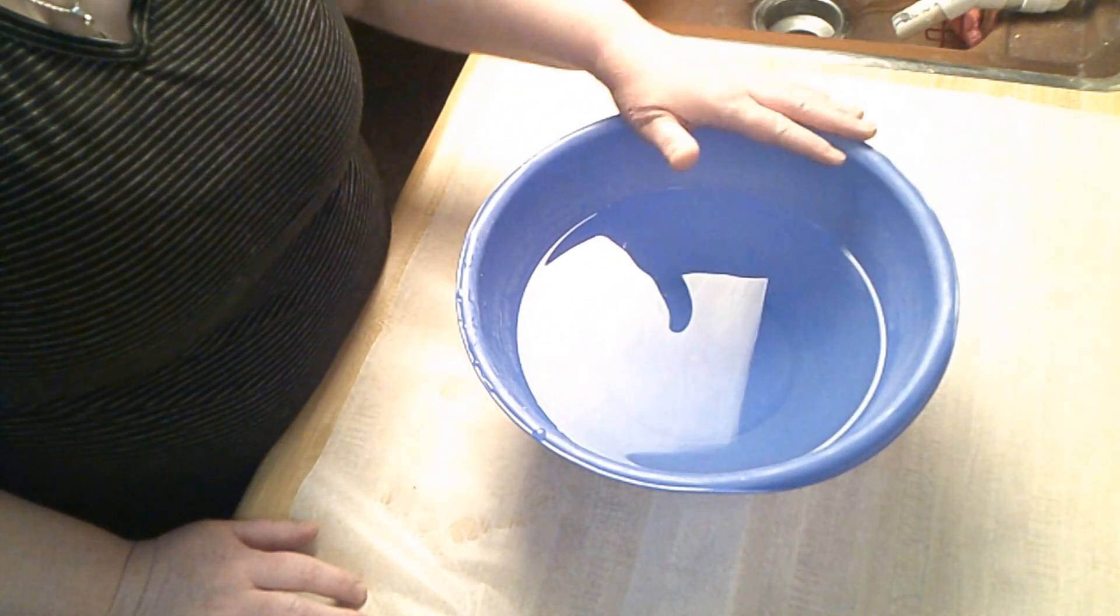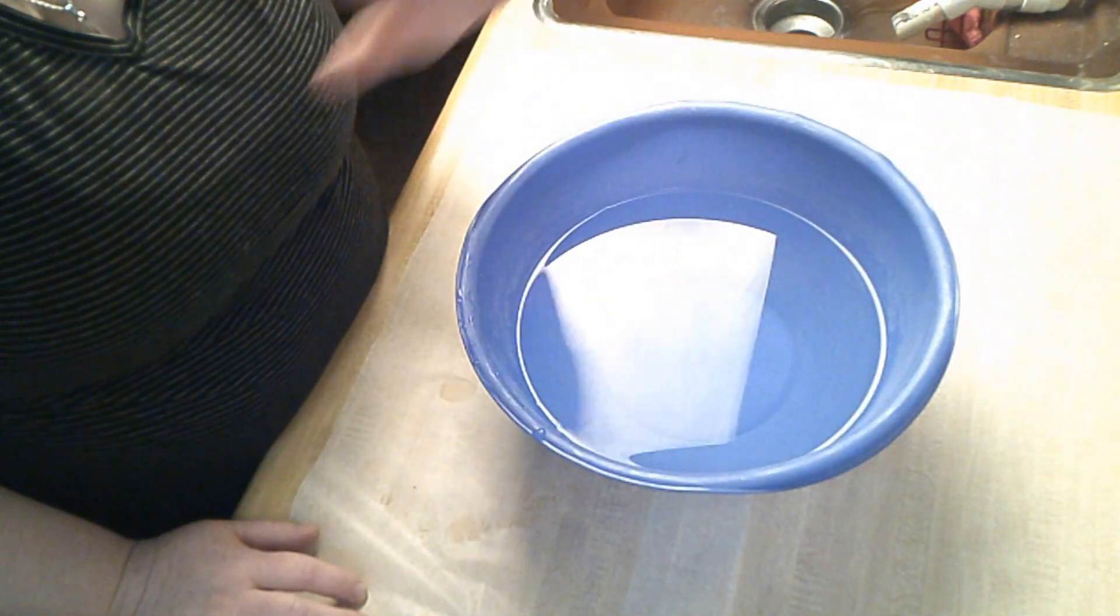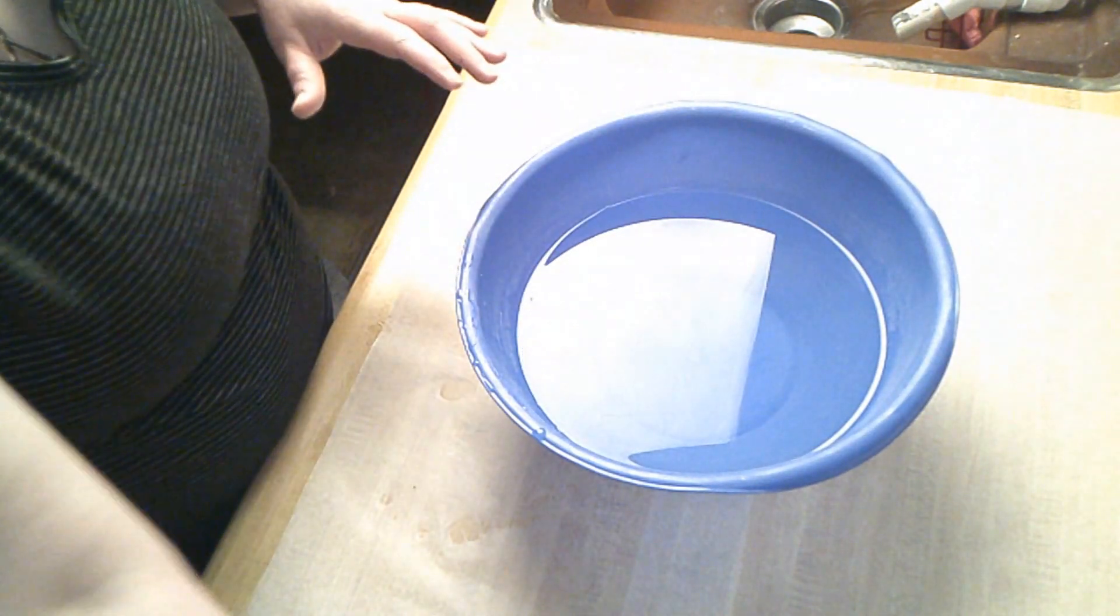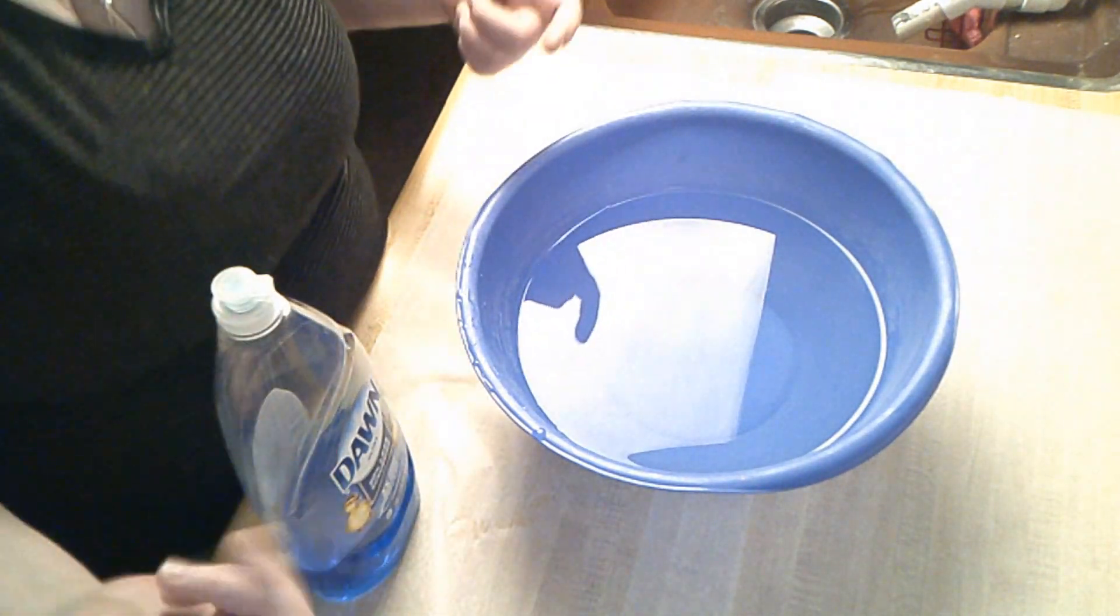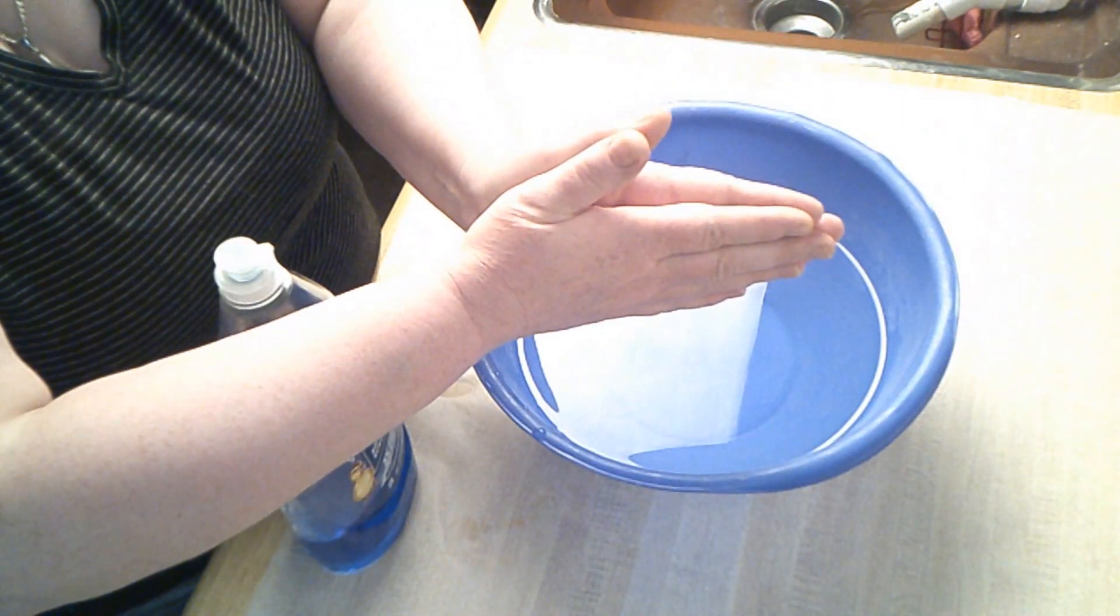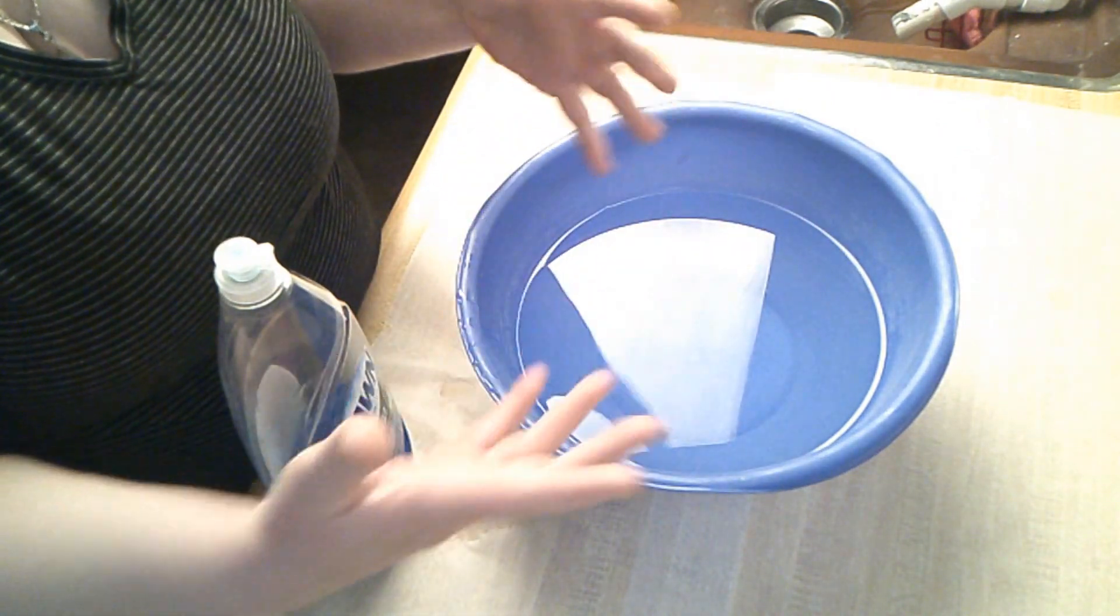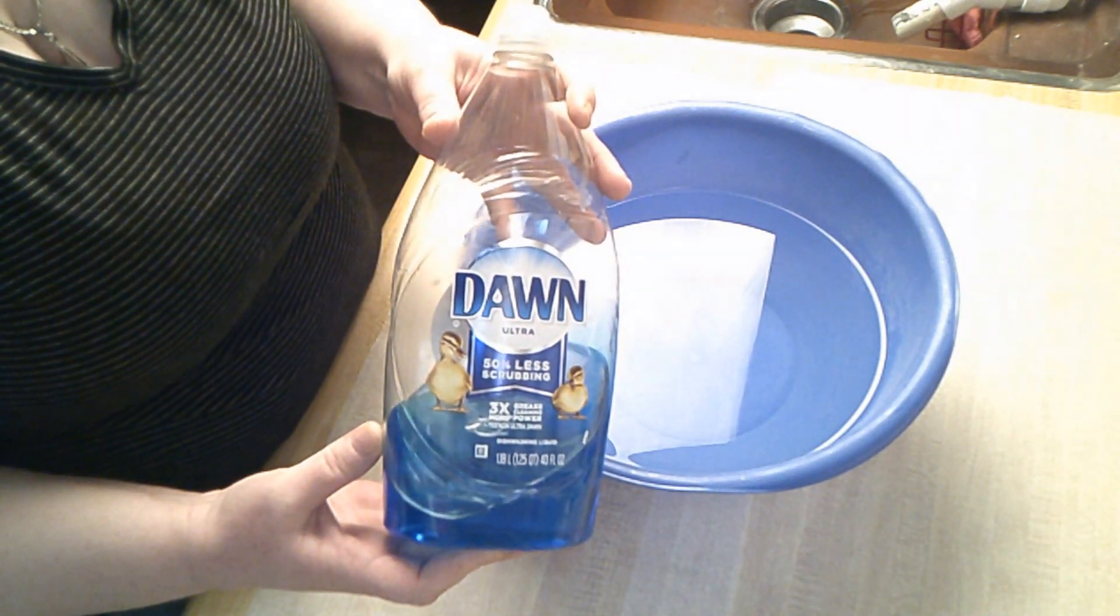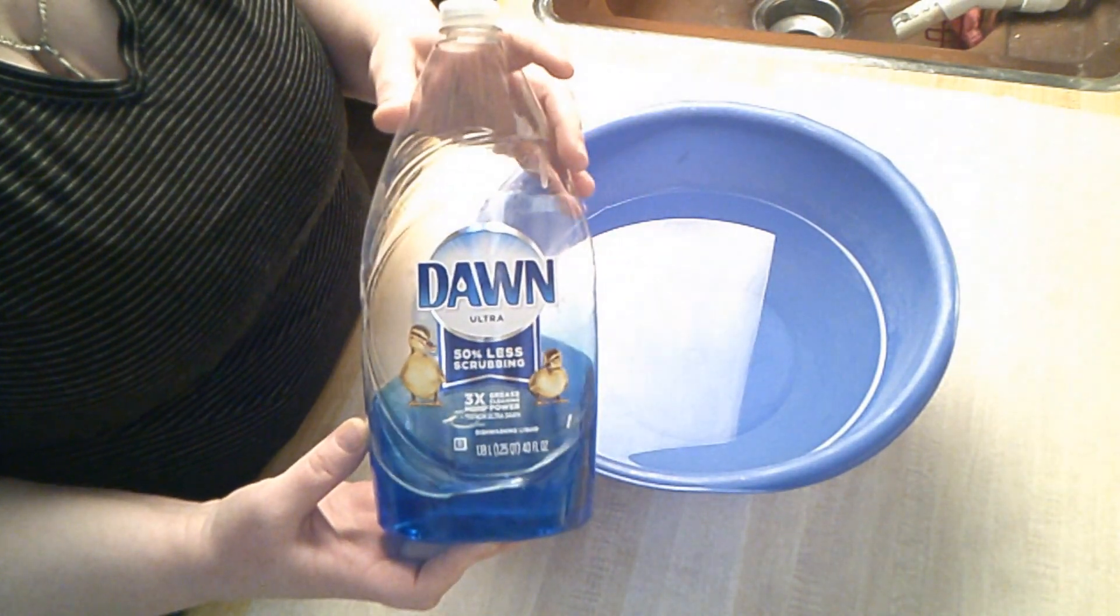So what we have is you need a bowl that you're never going to use again. Please don't ever use the bowl again because the silicone, you don't want to eat that. We need lukewarm water as the catalyst, because if you've ever bought a mold making kit before, you have your silicone and you have your catalyst, and then you combine them in equal parts. Well, we are using Dawn dish detergent. We're going to use this as our catalyst.